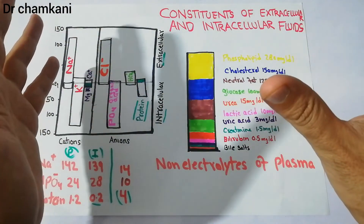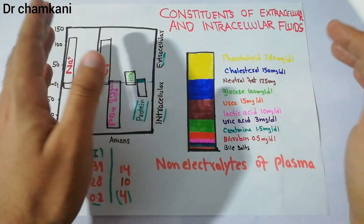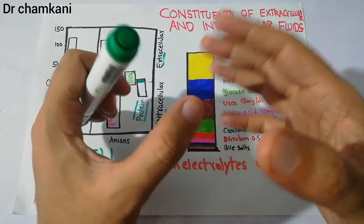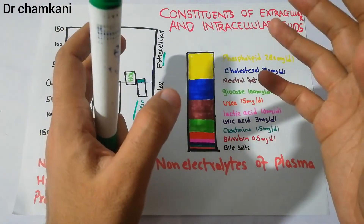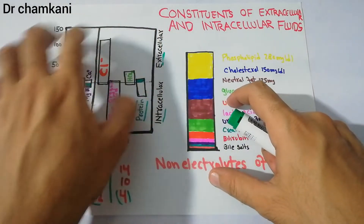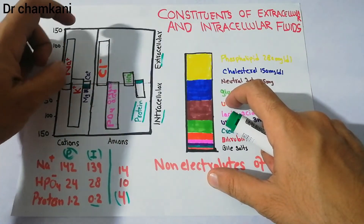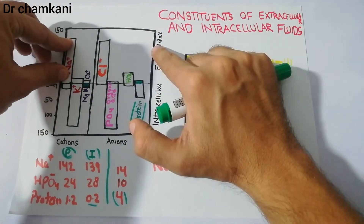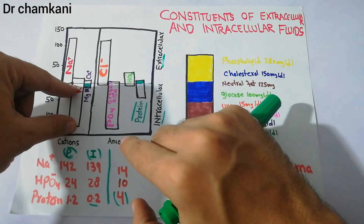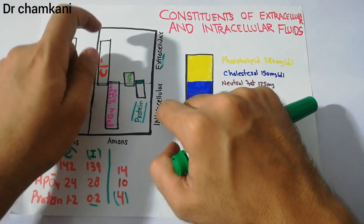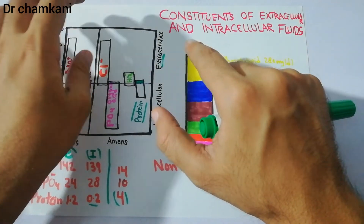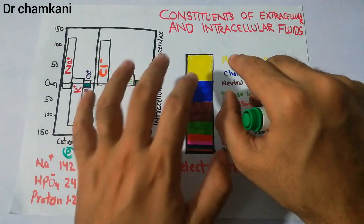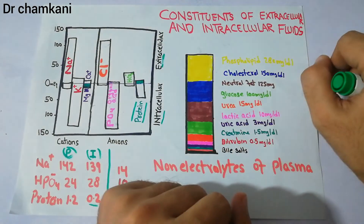This has been a brief introduction to the different constituents of the extracellular and intracellular fluids. As we proceed in this unit on the kidneys and body fluid, we will discuss how these different concentrations are maintained — for example, how sodium concentration is kept higher in the extracellular fluid and potassium higher in the intracellular fluid. These details will be discussed gradually in depth. Thanks for watching.